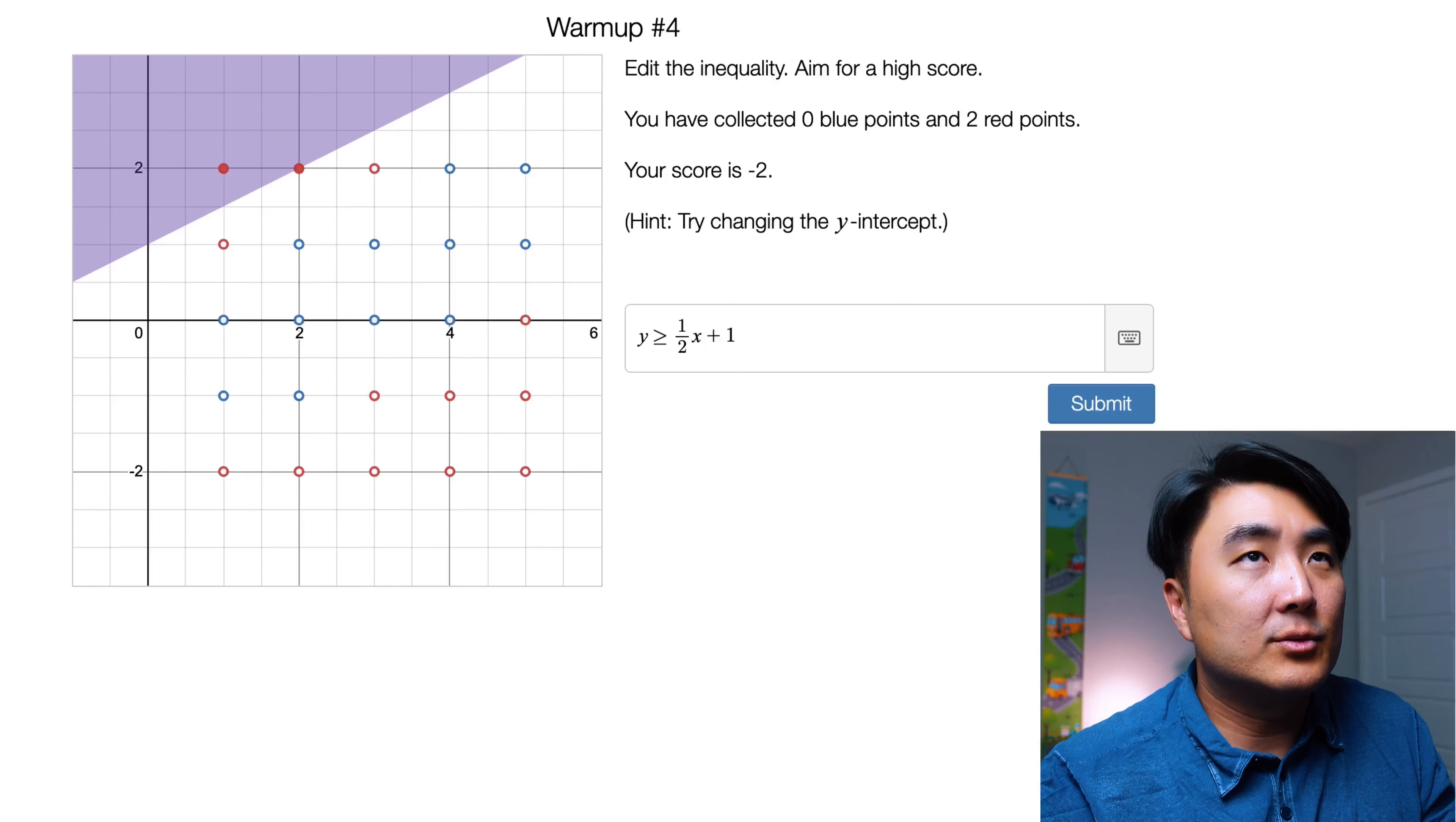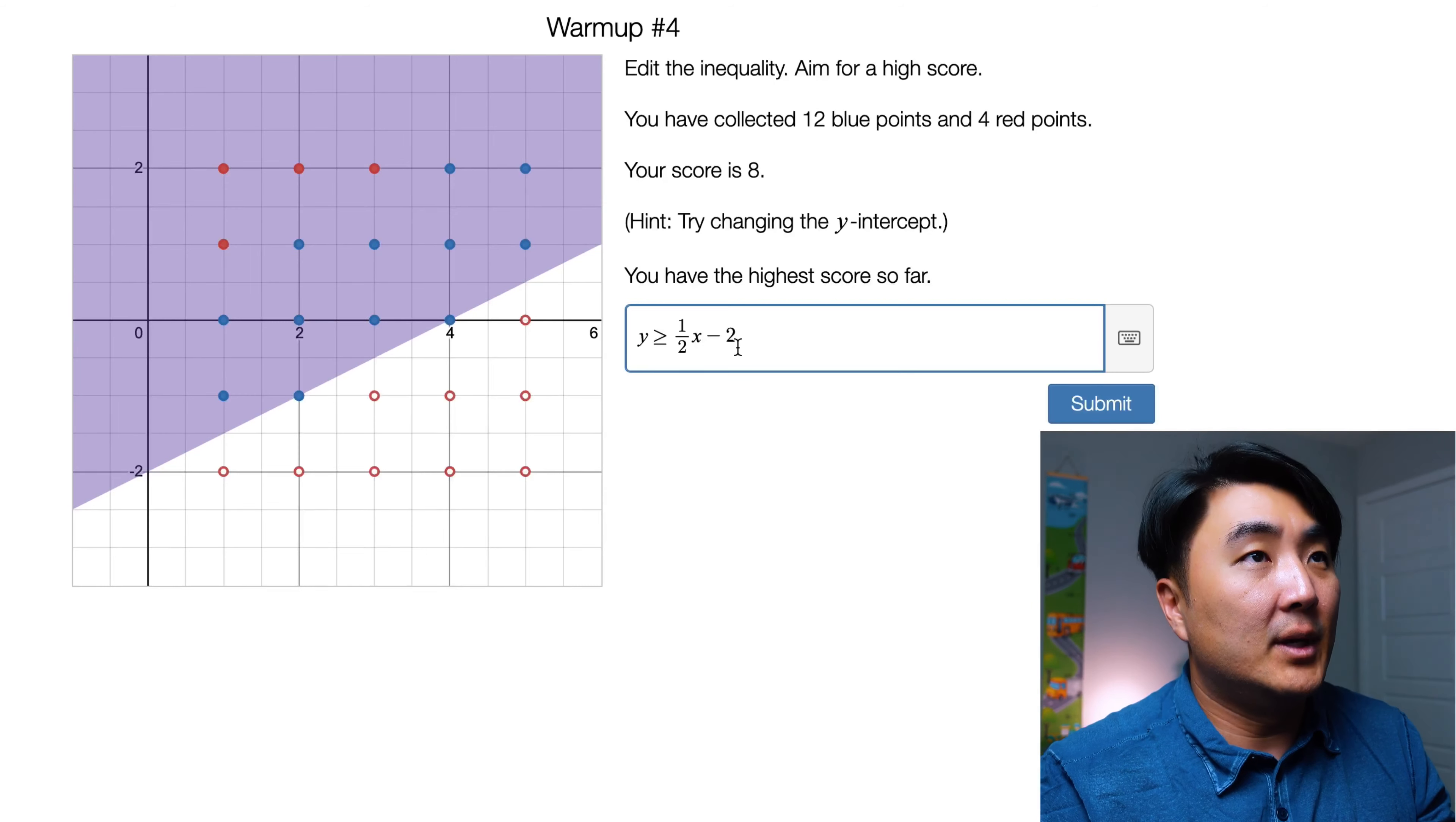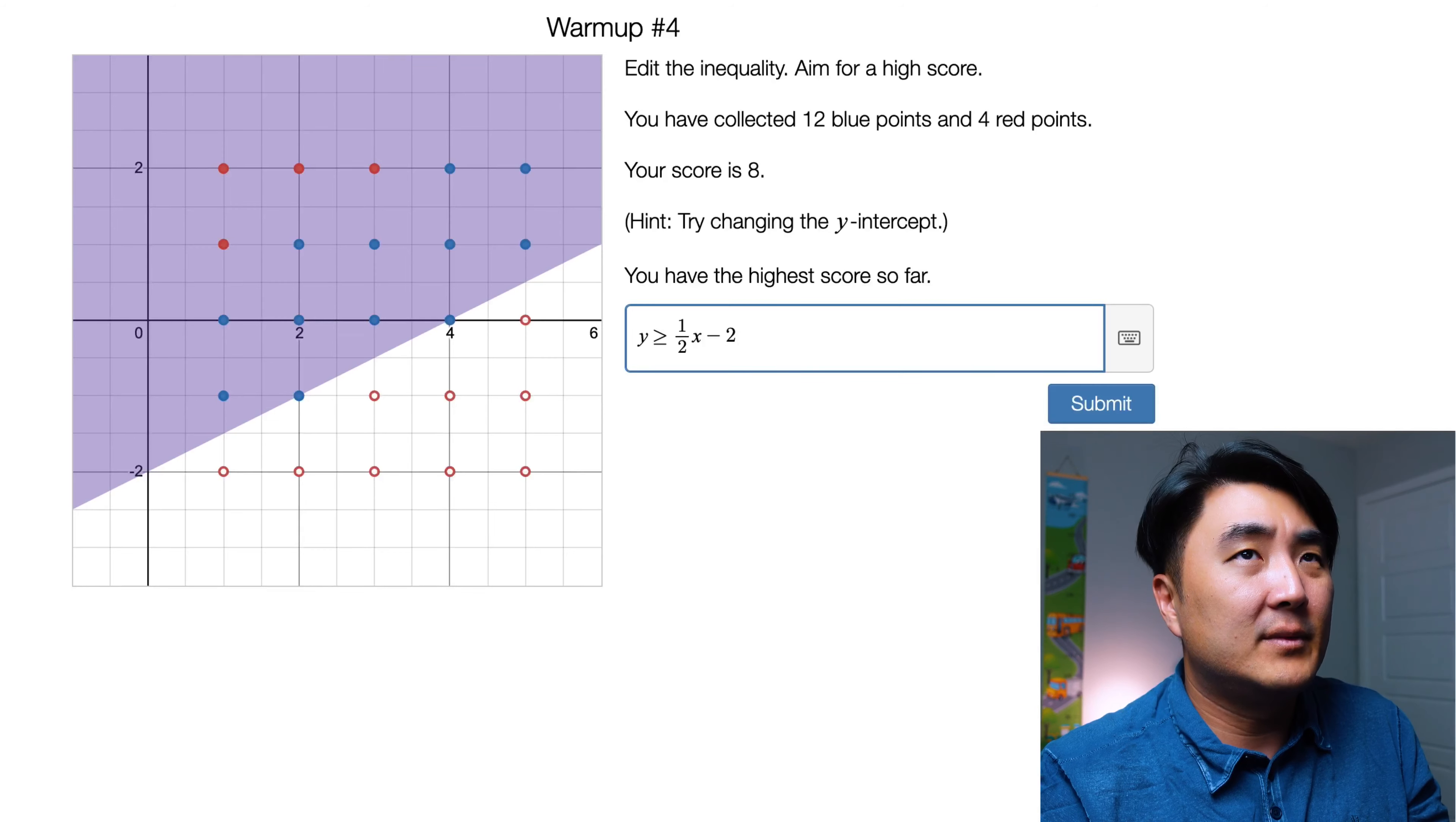So now screen four. Okay, so I see four red dots up there and a load of them down here. So we want to avoid the bottom. We want the top part. They just say try changing the Y intercept. Okay, I'm going to change this to a minus two. And because it is Y greater than or equal to, it's going to include those two blue points. And sure enough, we get eight points. And I don't think there's a way to get higher than that. Because if you did it any other way, I mean, we collected all the blue points and minimize the number of red points we can get. So I think eight is the highest score you can get.